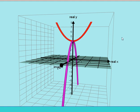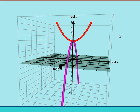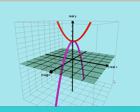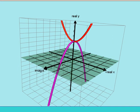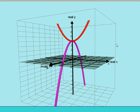And the solutions are where the graph crosses the x-plane, and that is going to be at 2i and negative 2i. So we can see the complex solutions.